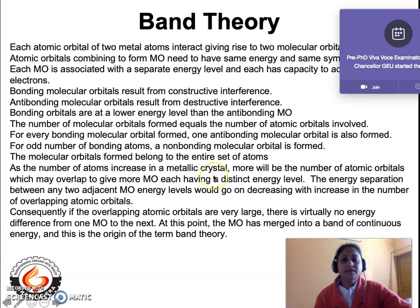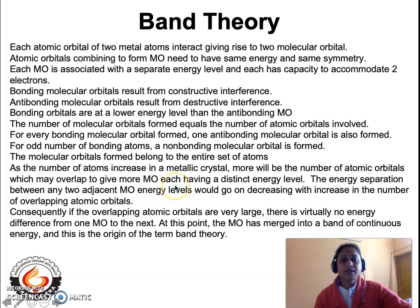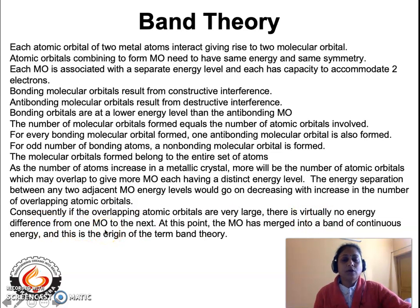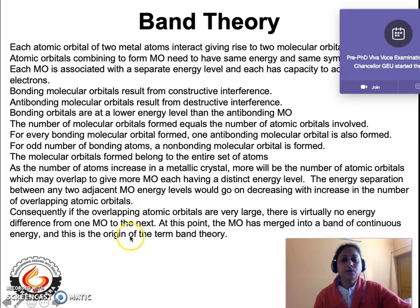As the number of atoms increases in a metallic crystal, more atomic orbitals overlap to give more molecular orbitals, each with a distinct energy level. The separation of energy between any two adjacent molecular orbital energy levels decreases with an increase in the number of overlapping atomic orbitals. When the overlapping atomic orbitals are very large in number, there is virtually no energy difference between one molecular orbital and the next. At this point, the molecular orbitals merge into a band of continuous energy — this is the origin of the term band theory.